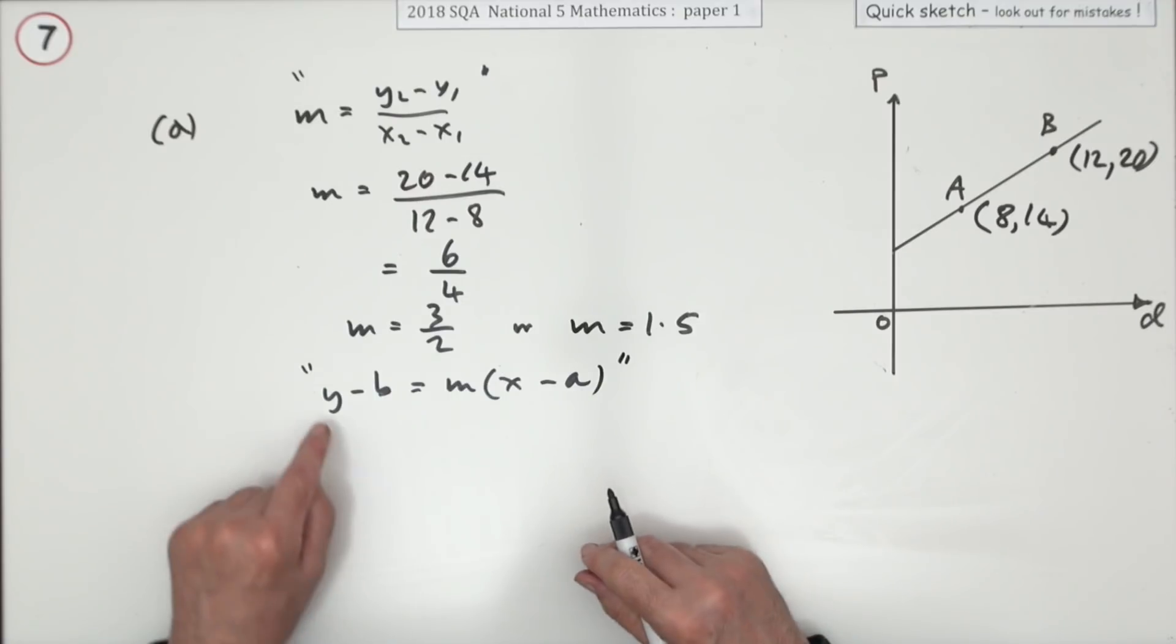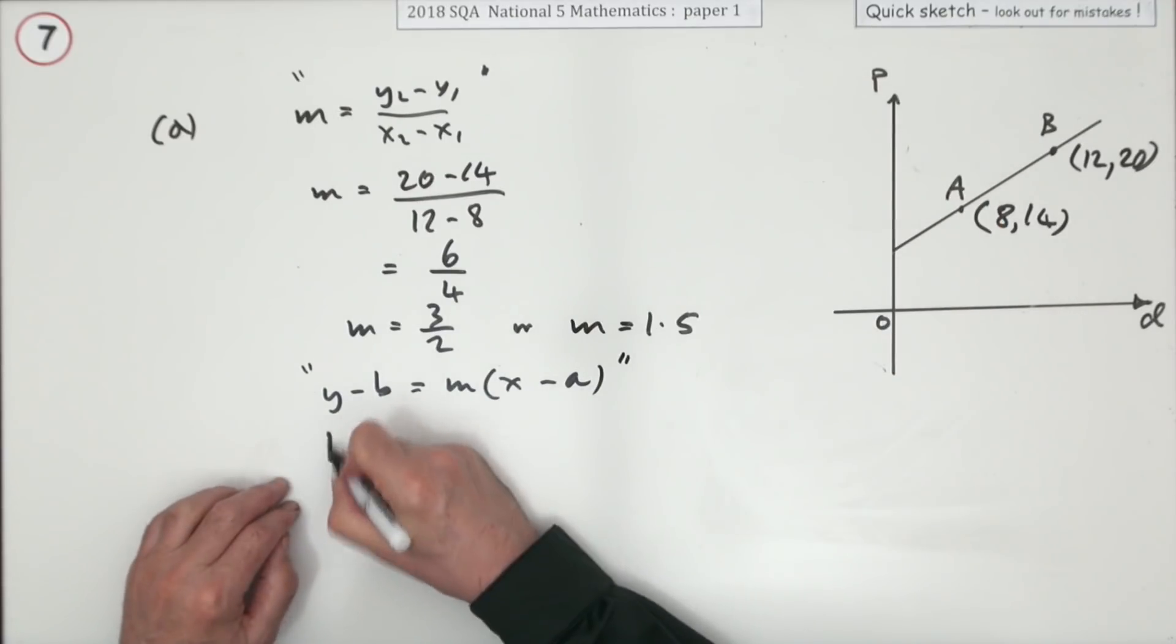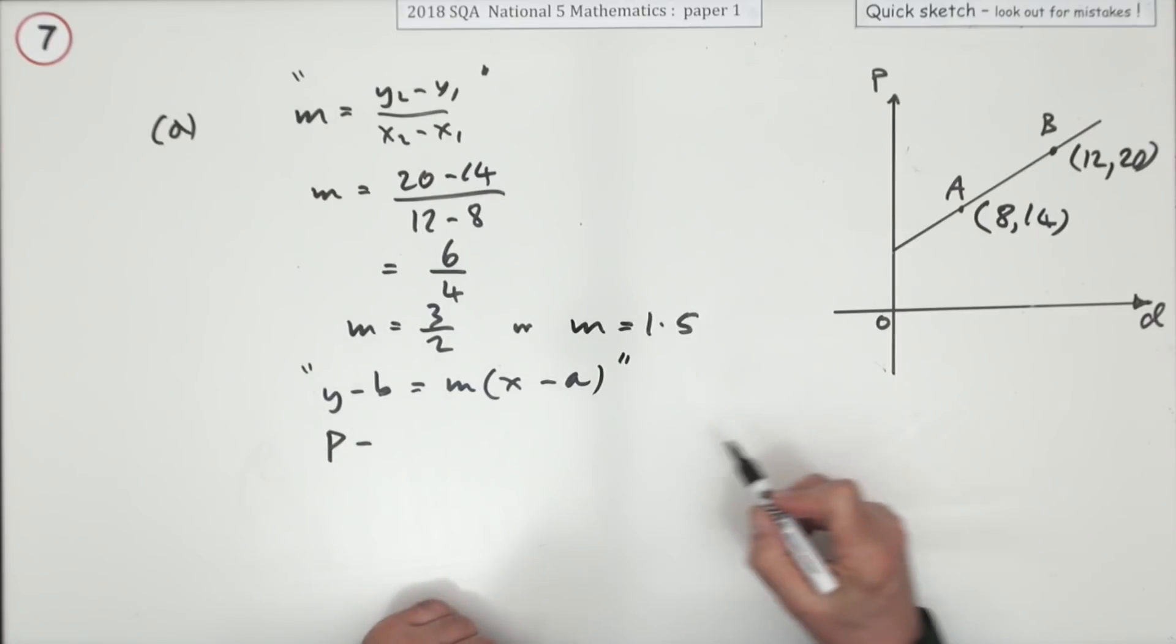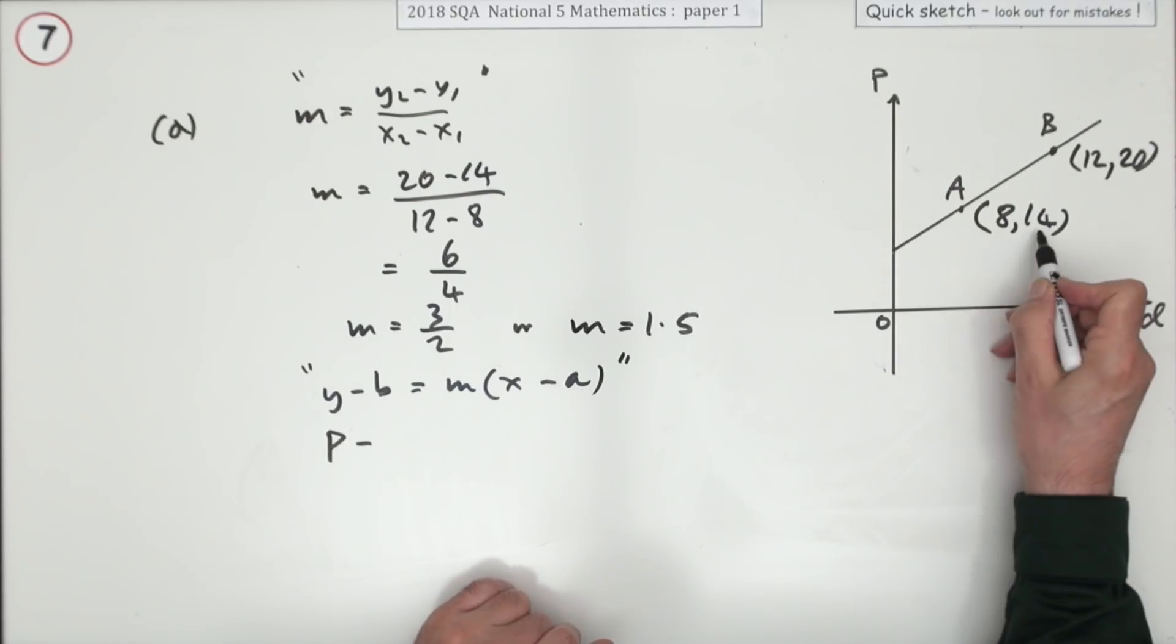But again, there's no y's and x's, that's just the form I'm going to use. Now have to be careful: y is the name of this axis, which is actually p. b is the second coordinate in a point I want to choose, that'll be the 14.